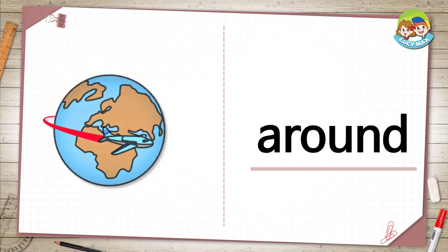The next word is around. In the picture, you can see a plane going around the world. It starts in one place and goes in a circle. Can you run around your house?